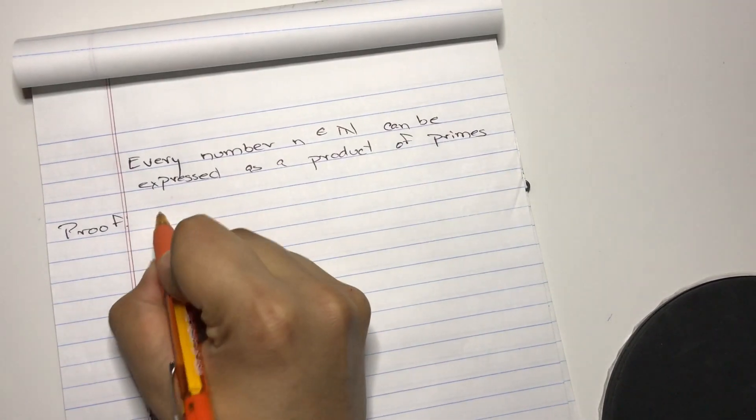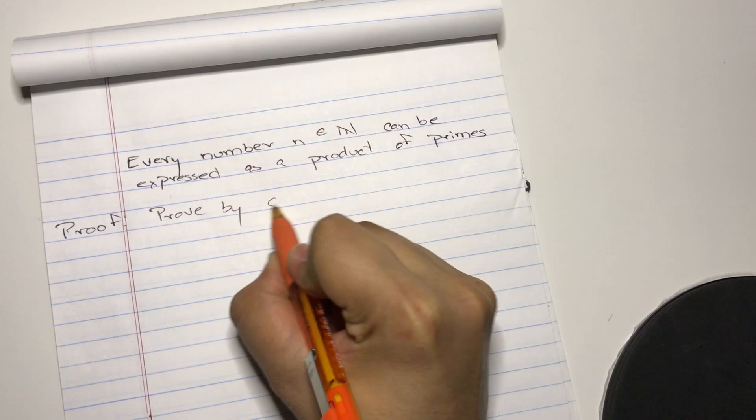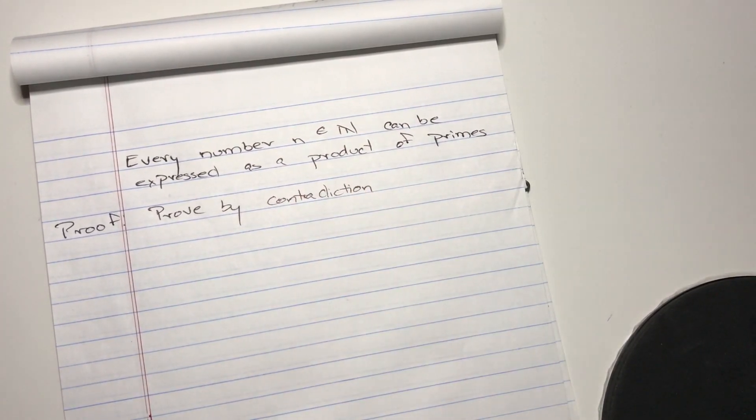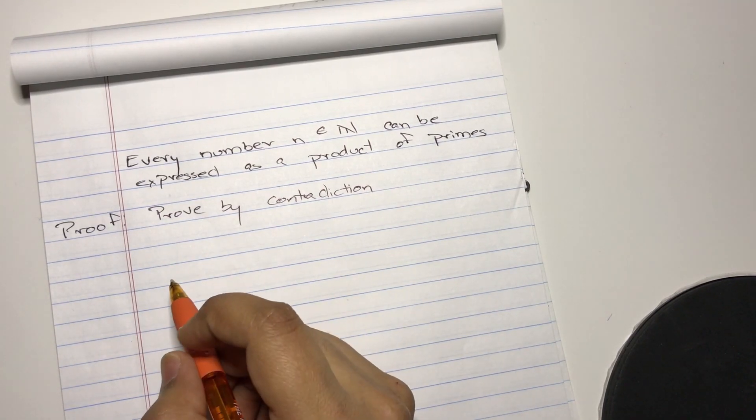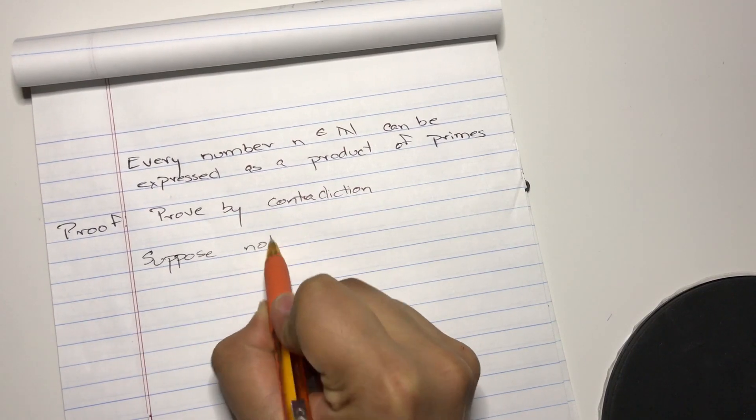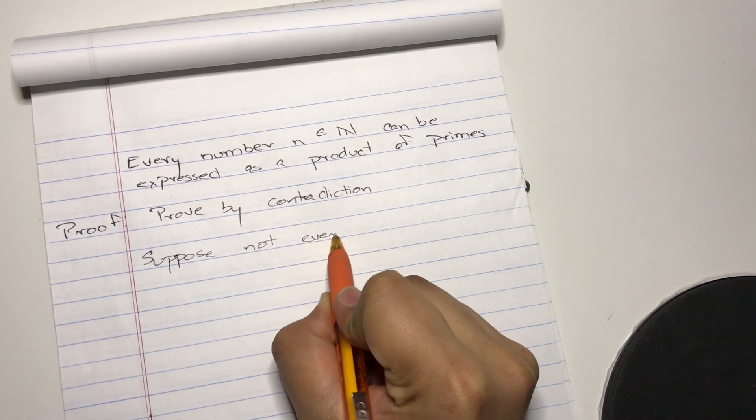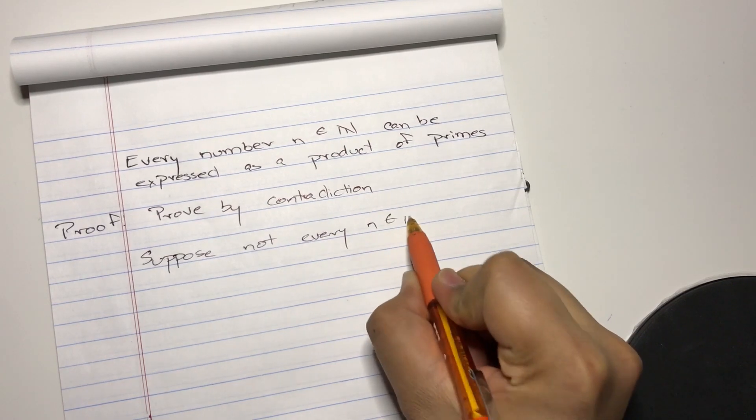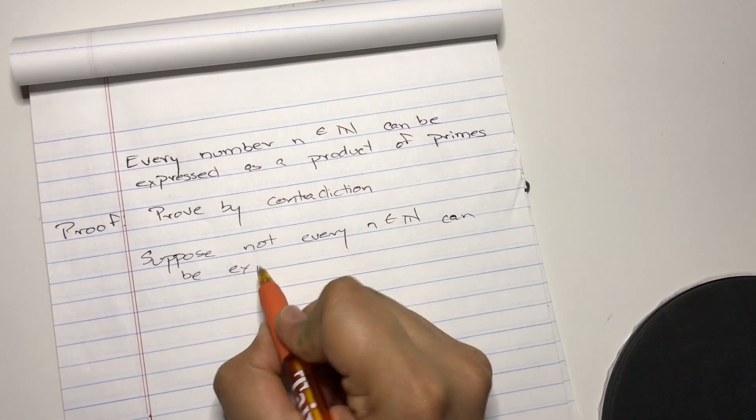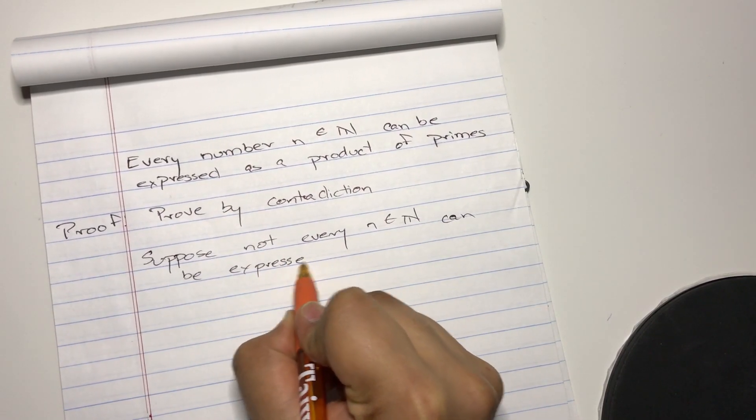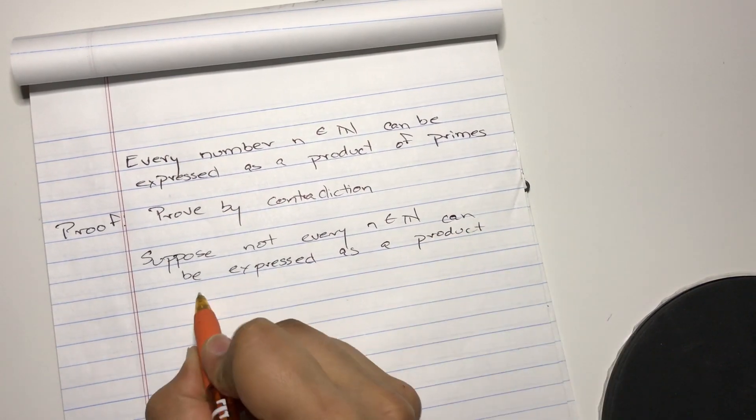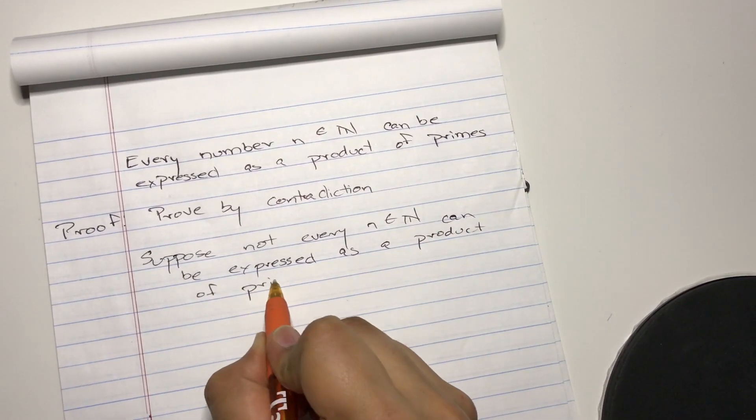We're going to prove by contradiction. So we're going to suppose not every number n belonging to the set of natural numbers can be expressed as a product of primes.